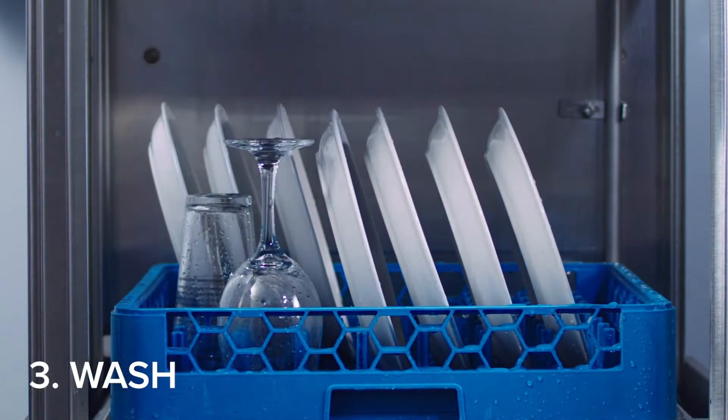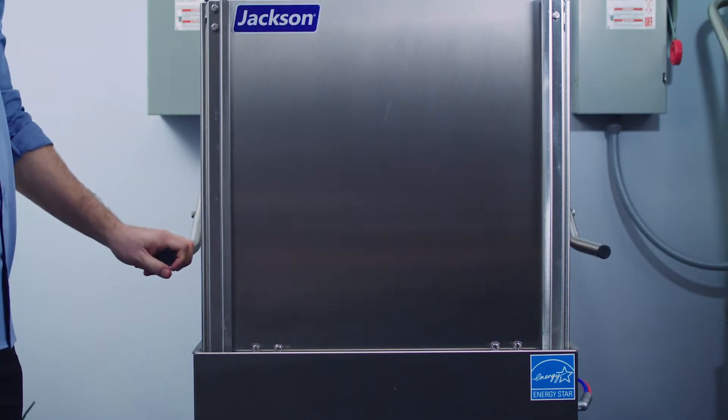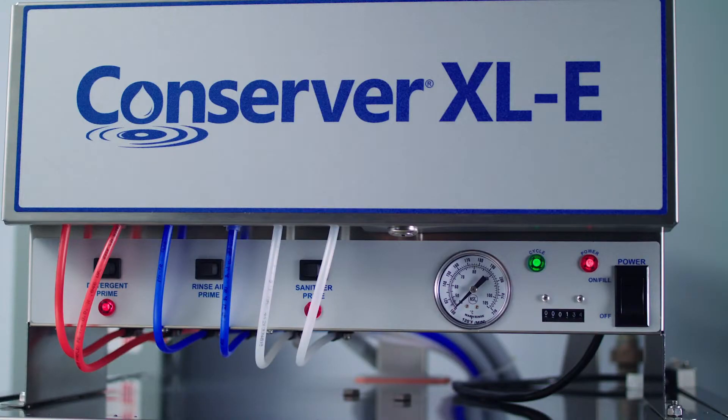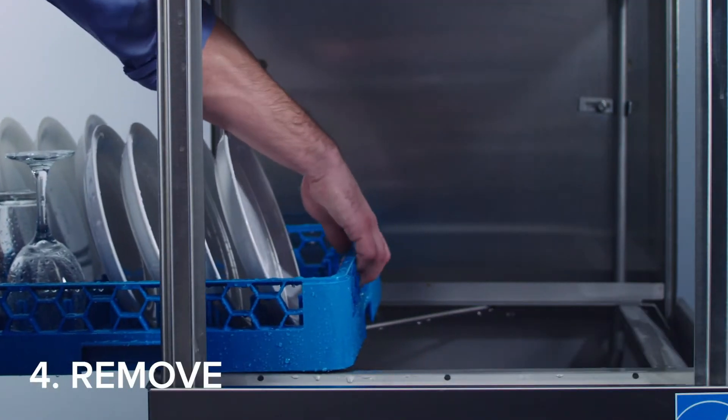Slide the rack into the ware washer and close the door. The cycle will begin automatically. When the light indicates that the wash cycle is complete, remove the rack of clean dishware.